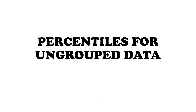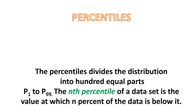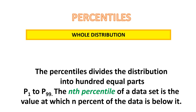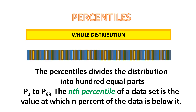Now, let's go to our topic: percentiles for ungrouped data. What's the meaning of percentiles? Percentiles divide the full distribution into 100 equal parts, and there are 99 percentiles.